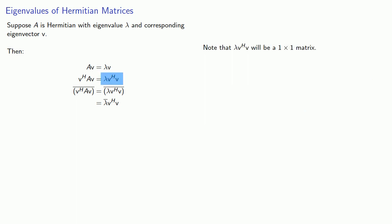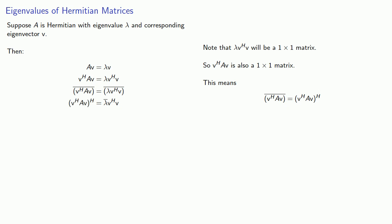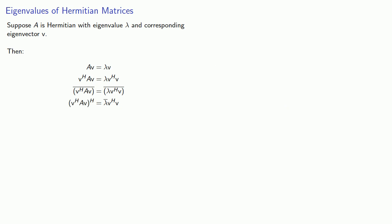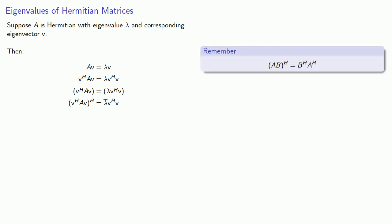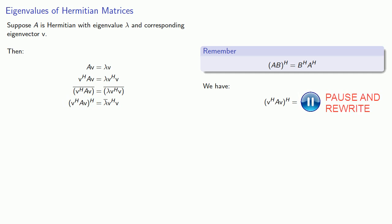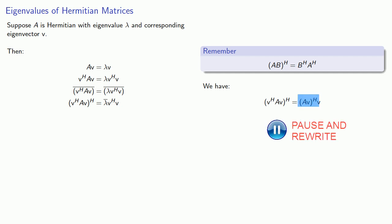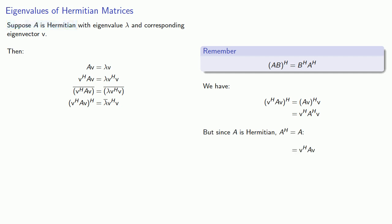Note that lambda times V Hermitian V is a 1-by-1 matrix, and so is V Hermitian A V. When we take the conjugate of a 1-by-1 matrix, it is the same as taking the Hermitian. We apply the property that the Hermitian of a product is the reverse product of the Hermitians. Since A is Hermitian, A Hermitian equals A itself.